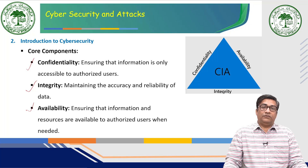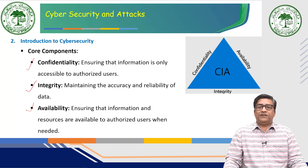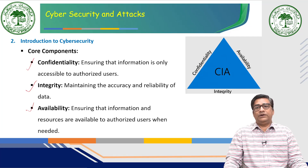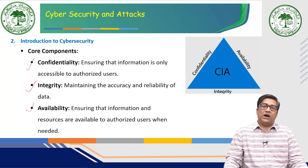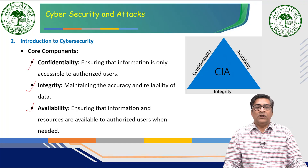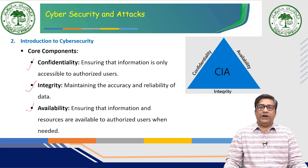Availability ensures that authorized users can access resources whenever required. This involves redundancy, failover strategies, and robust network security protocols, all of which work to prevent disruption from hardware failures, cyberattacks, or other incidents that could impede access to critical resources. Together, these components — referred to as CIA — form the foundation of strong cybersecurity frameworks, protecting data and ensuring the resilience of digital infrastructure.